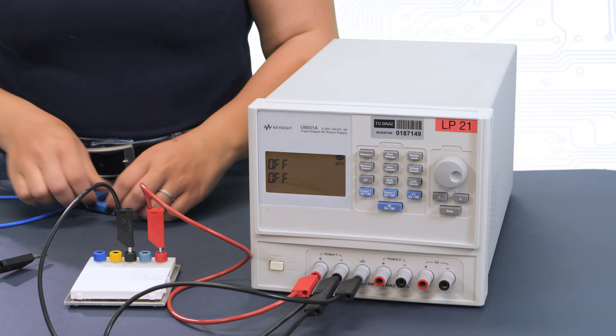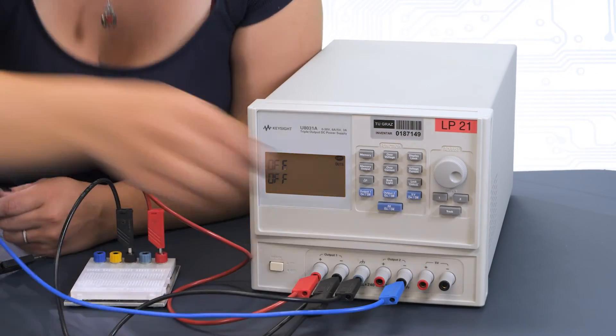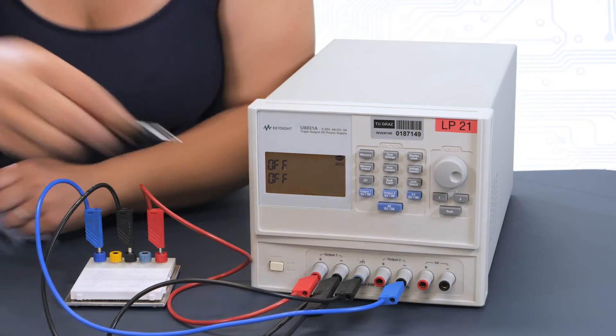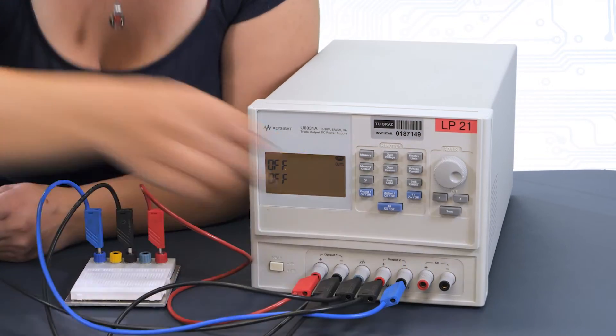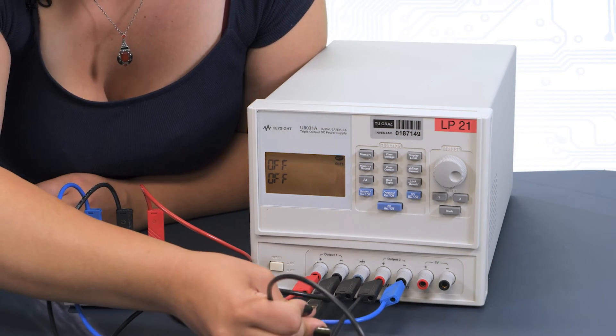Next, we still need the minus 12 volts. For this, we use the second output of the power supply. The minus side is now connected to the minus 12 volt connection of the circuit, and the plus side is connected to the minus side of the other output, which is our reference potential.